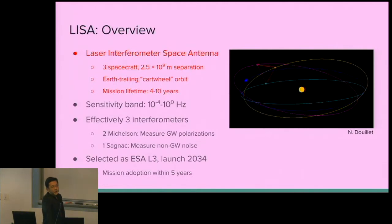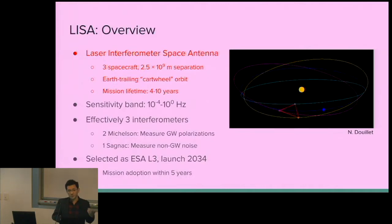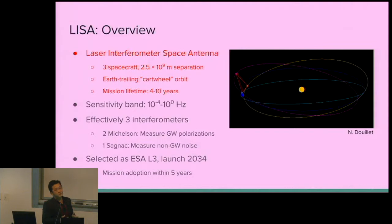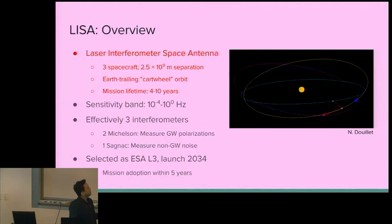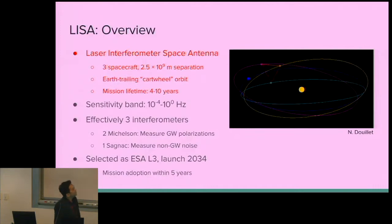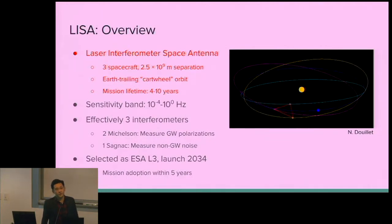LISA stands for the Laser Interferometer Space Antenna. It consists of six inertial test masses housed inside three spacecraft, separated by 2.5 million kilometers. The spacecraft are drag-free in the sense that they don't apply forces to the test masses along the interferometer axes, and they communicate with each other via laser transponders. LISA will be placed in orbit around the sun, trailing the earth by about 20 degrees, and the mission will last for at least four years, with the possibility of extension up to ten.